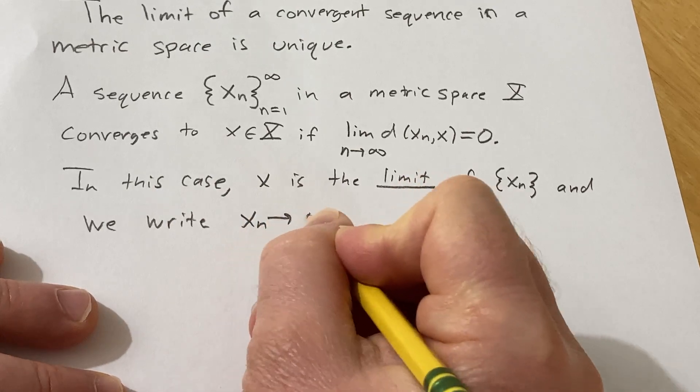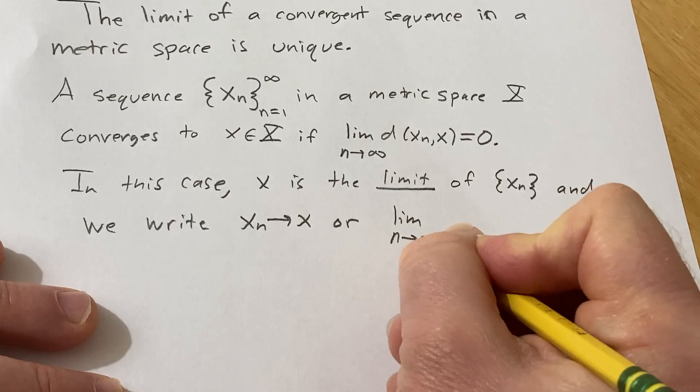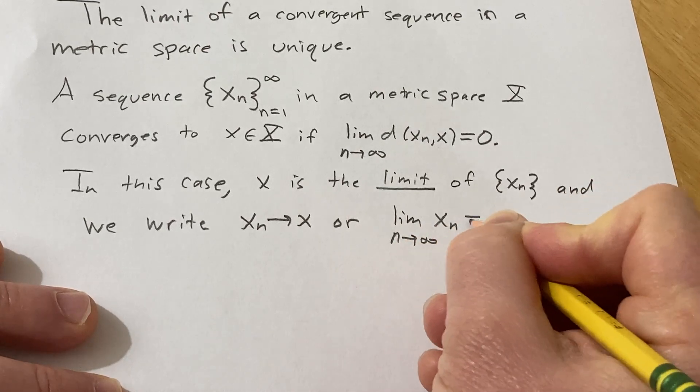We write x sub n approaches x, or the limit as n approaches infinity of x sub n is equal to x.